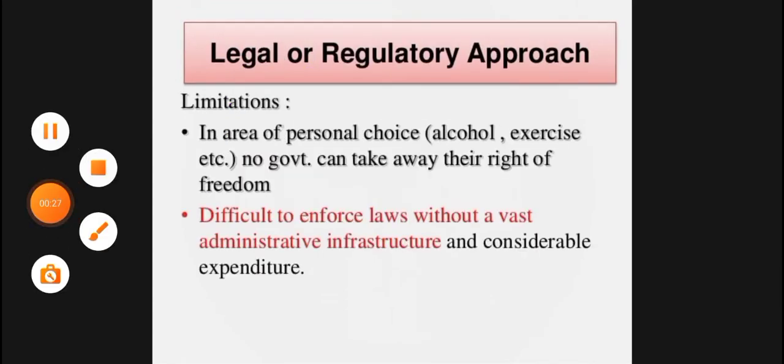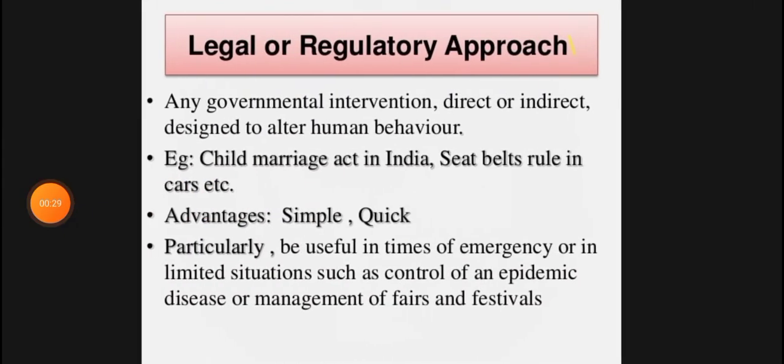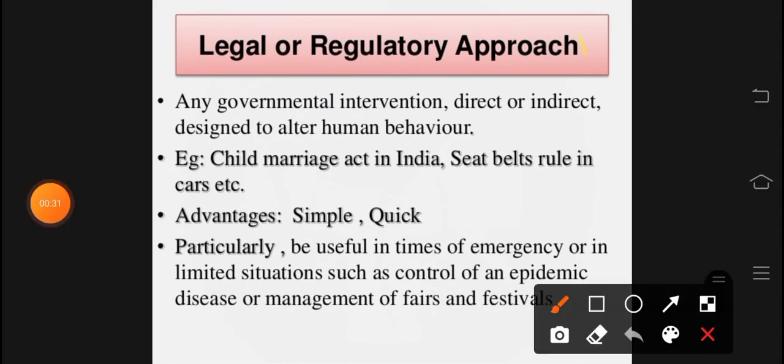First of all, it is the legal and regulatory approach. What happens is that the government has an intervention or a legal framework set directly or indirectly, so that human behavior will be corrected. For example, the Child Marriage Act — this age will be married and this age will not. Seat belts will be put on. So the government or the law intervenes to guide human behavior in health education.